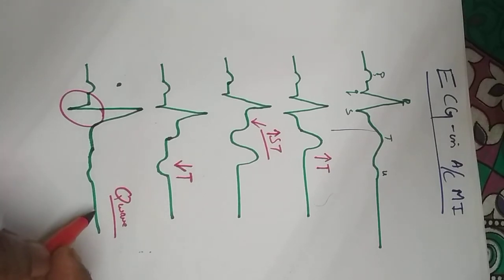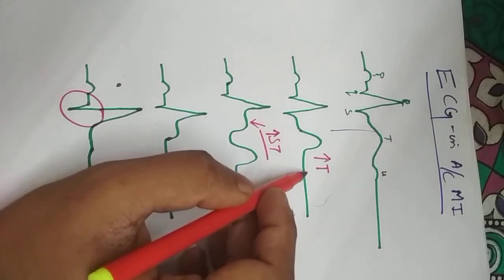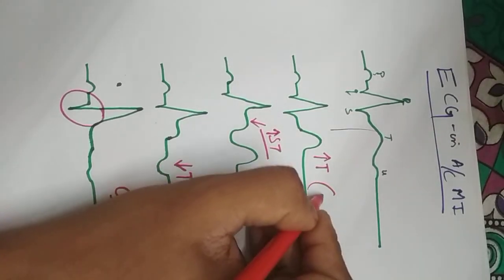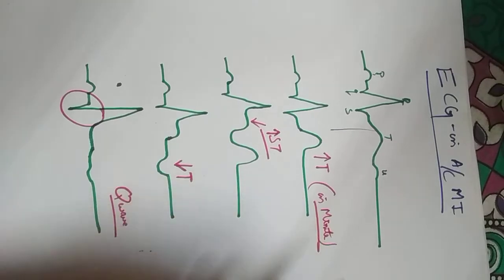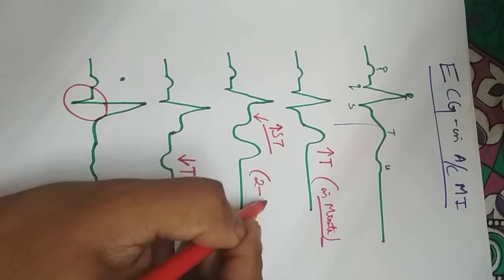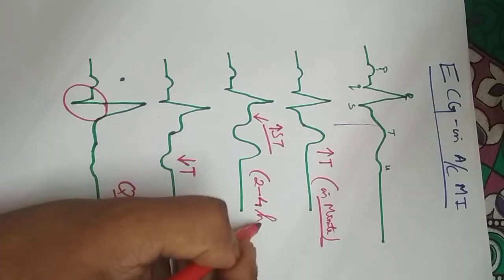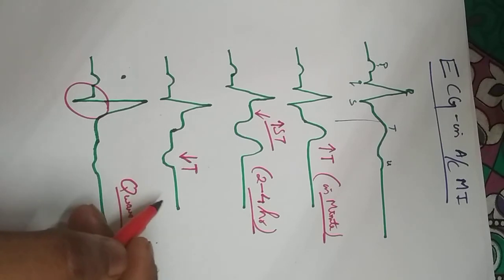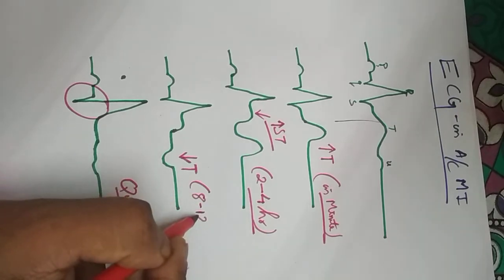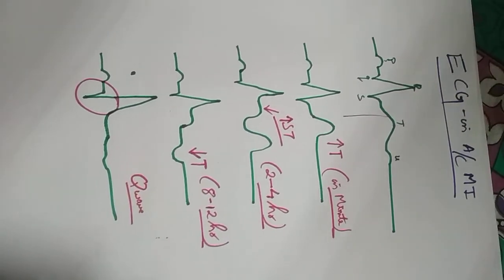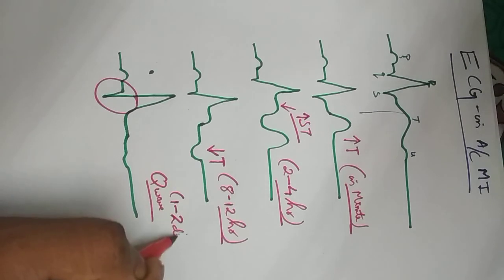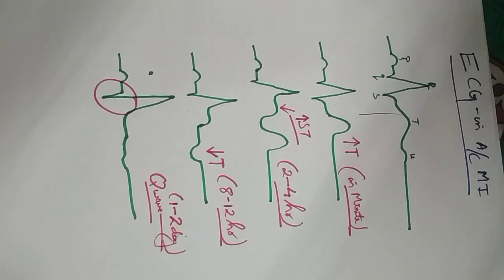In summary: the first change is increase in amplitude of the T wave, occurring within minutes. The second change is ST segment elevation, taking around 2 to 4 hours. The third change is inversion of the T wave, occurring around 8 to 12 hours after myocardial infarction. The fourth change is the Q wave, which develops within one to two days after the attack.